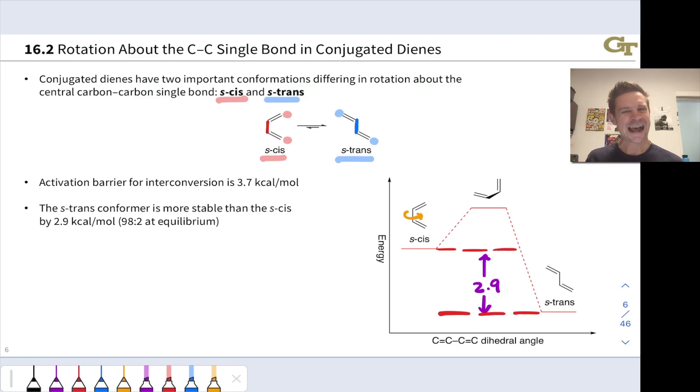Why is there an activation barrier to rotation about a single bond? We know from introductory chemistry and basic ideas about valence bond theory and sigma bonds that they're generally free to rotate because rotation doesn't mess with the orbital overlap between the sp2 hybrids involved in making that sigma bond. But conjugated dienes are unique because the pi electrons in a conjugated diene are actually delocalized over all four atoms.